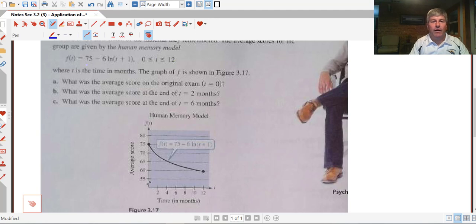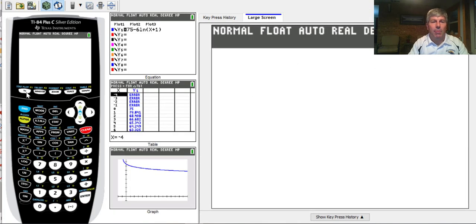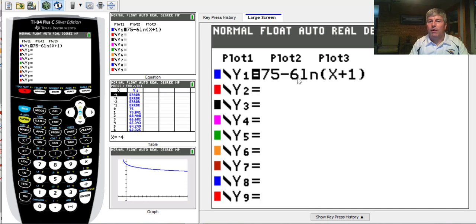Our dependent variable, our y's, we're not sure what happens here, but obviously we can't have anything higher than 75. We don't know how low that goes. So when we're getting ready to put this into our calculator, we've got to set our window.